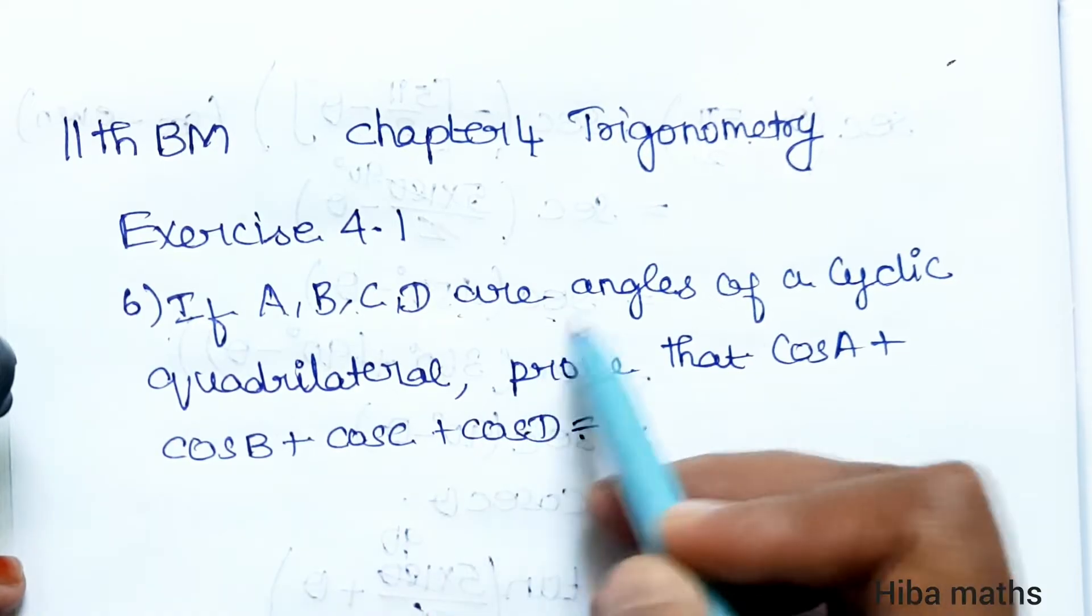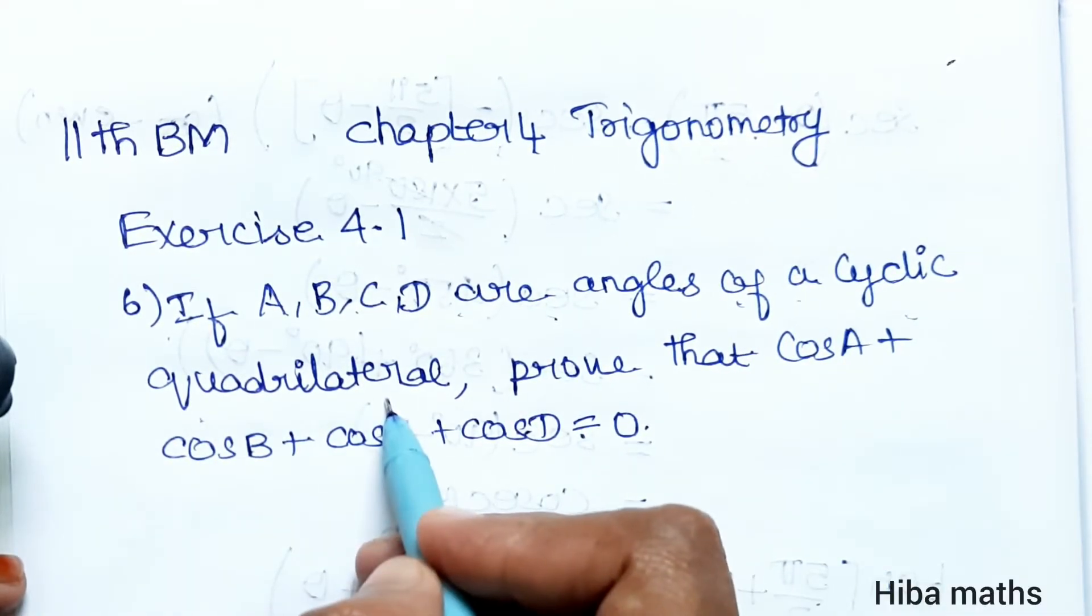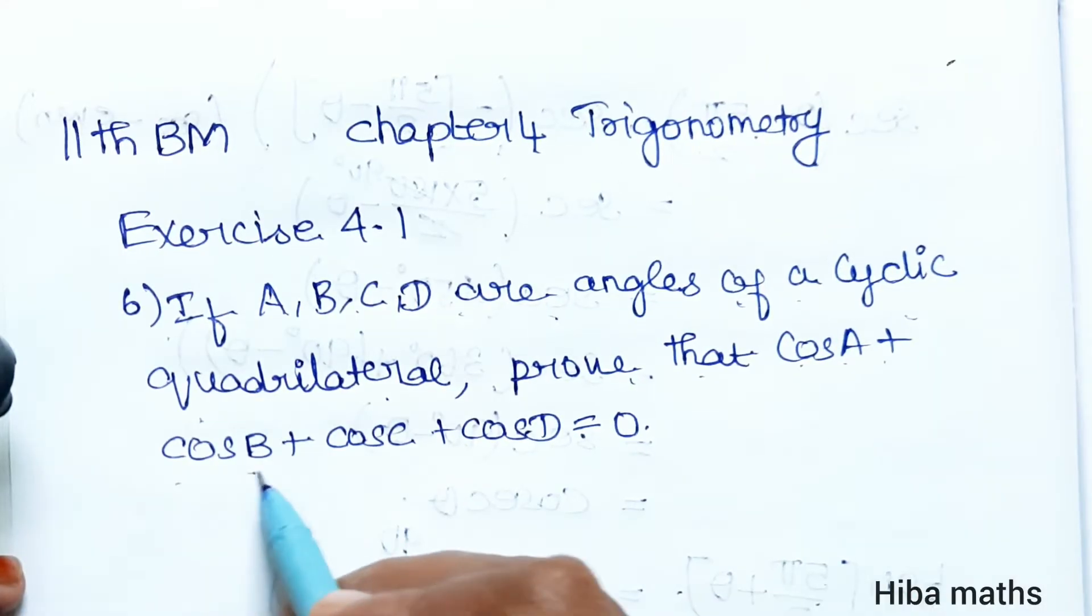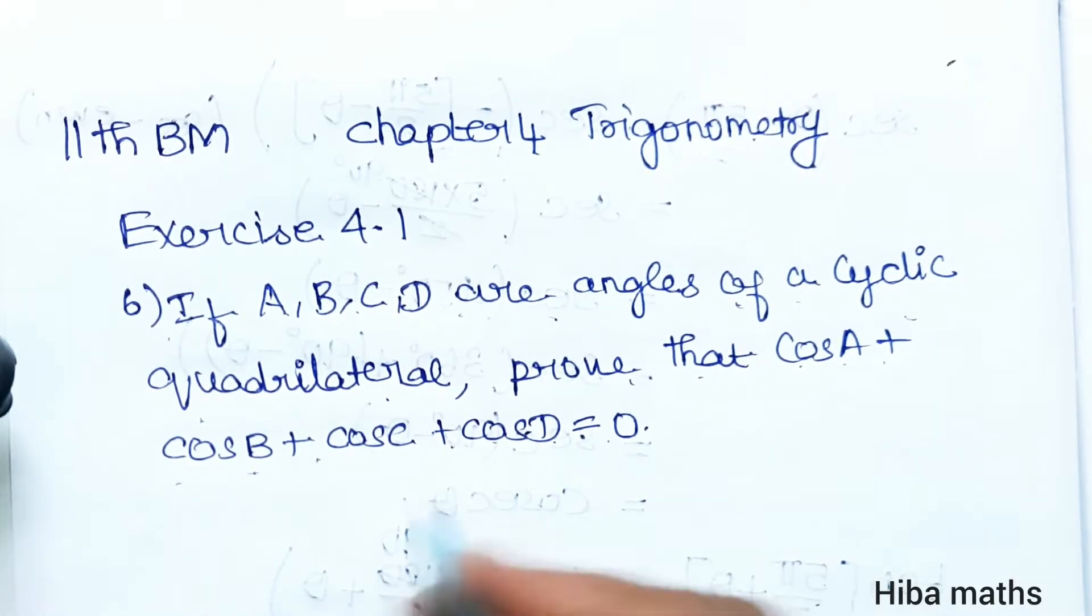If A, B, C, D are angles of a cyclic quadrilateral, prove that cos A plus cos B plus cos C plus cos D equal to 0.